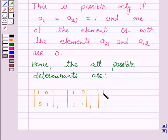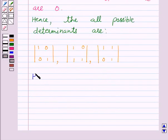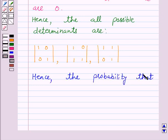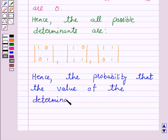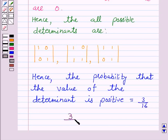Hence the probability that the value of the determinant is positive is equal to 3 over 16. So the answer for the above question is 3 over 16.